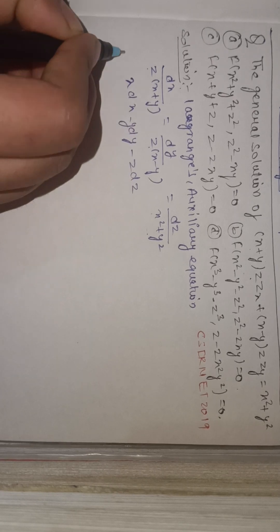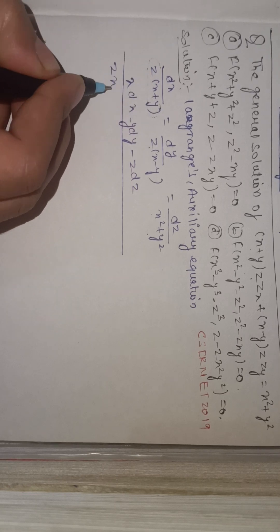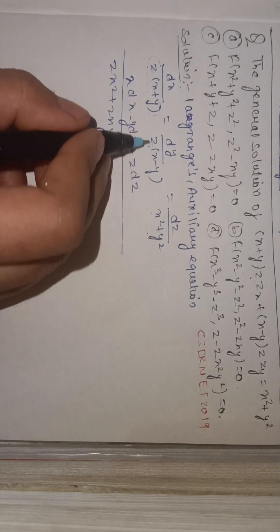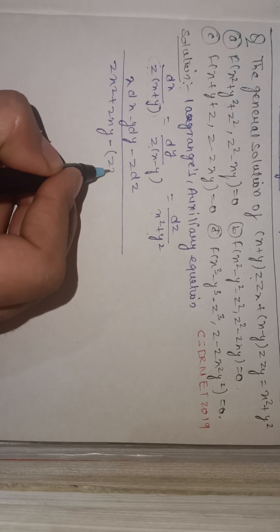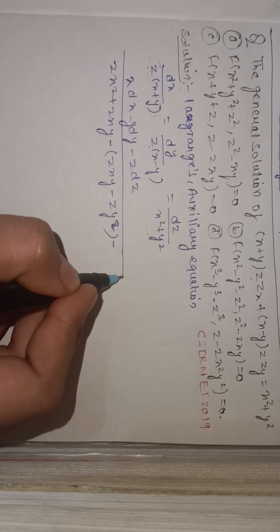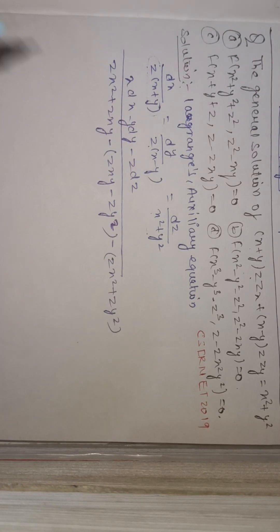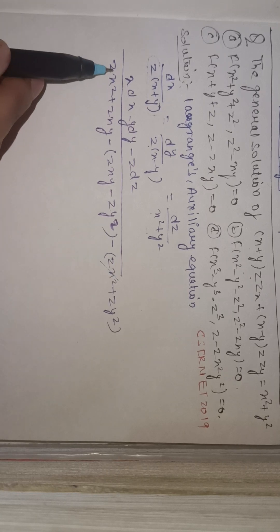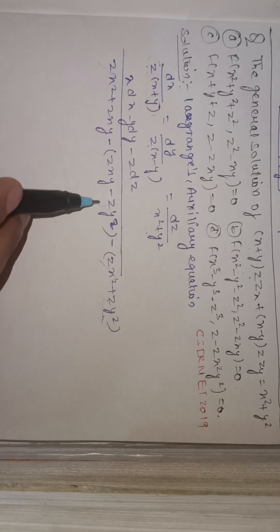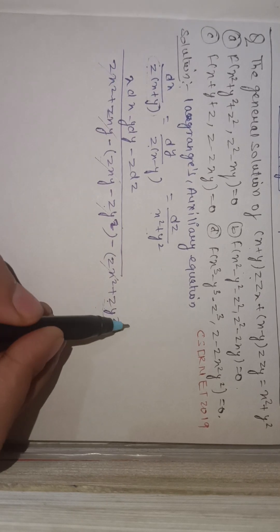Multiplying by y gives terms zxy - zy² + zxy. After combining and subtracting, we get terms zx² + zy² in the denominator. We see that all terms cancel each other: zy² cancels with zy², and zxy cancels with zxy, so the denominator becomes zero.